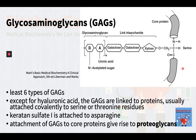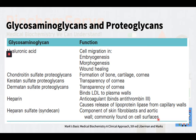This attachment of GAGs to core proteins gives rise to proteoglycans. After synthesis, proteoglycans are secreted from cells and thus function extracellularly. Because the long, negatively charged glycosaminoglycan chains repel each other, the proteoglycans occupy a very large space and act as molecular sieves, determining which substances enter or leave cells. Their properties also give resilience and flexibility to substances such as cartilage, permitting compression and re-expansion of the molecule to occur.